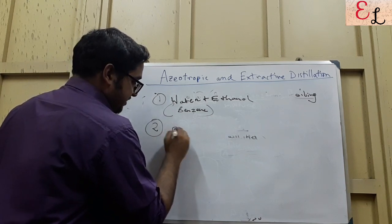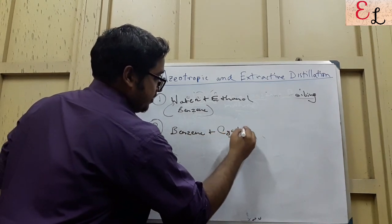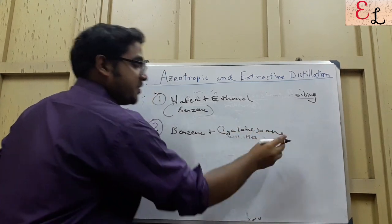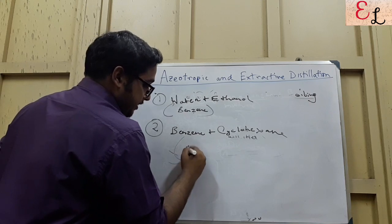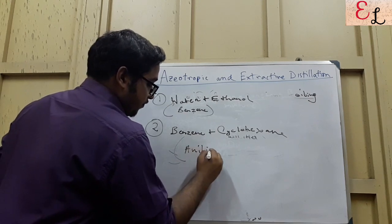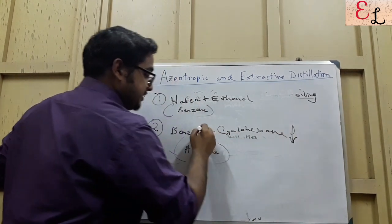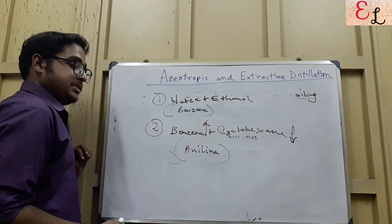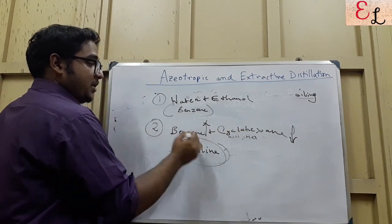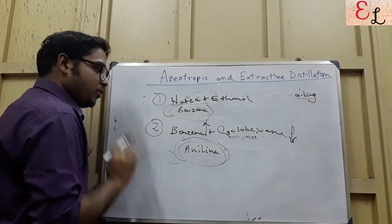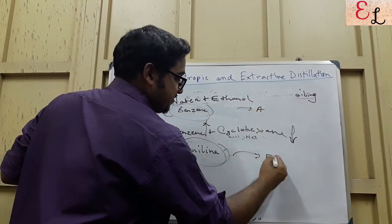An example of extractive distillation: benzene plus cyclohexane. As you can see, both have similar structures and similar volatilities. The entrainer is aniline, a type of solvent. Aniline forms a solution such that cyclohexane's volatility decreases and benzene's volatility increases, affecting volatilities rather than forming a complex or azeotrope with either. This contrasts with the benzene-water azeotrope in the previous case.